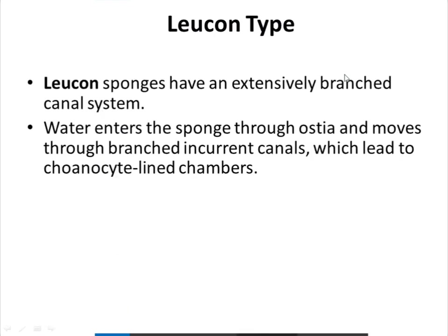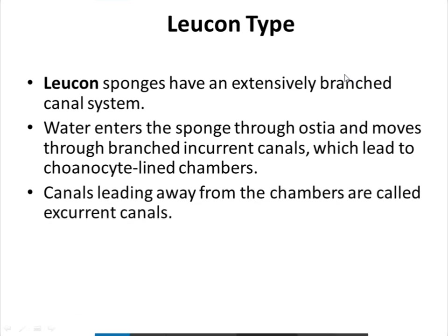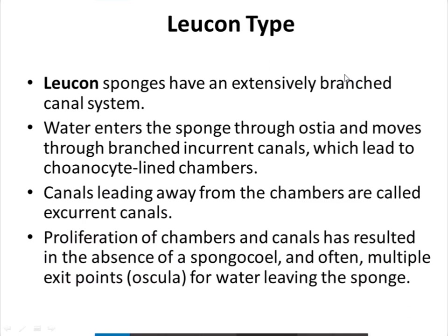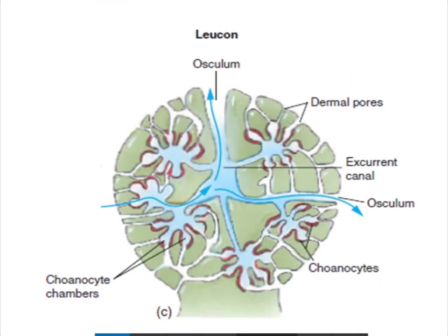Leucon sponges have an extensively branched canal system. Water enters through ostia and moves through branched incurrent canals, which lead to choanocyte-lined chambers. The canals leading away from the chambers are called excurrent canals. In the diagram, dermal pores lead to incurrent canals, which lead to choanocyte chambers. From the choanocyte chamber, water moves directly into the excurrent canal.